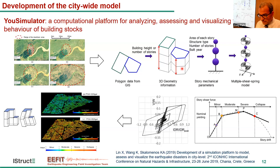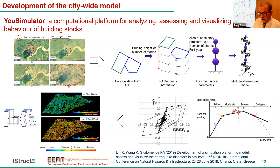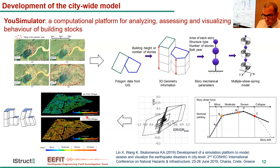This relationship is based on the seismic design codes of the region, the structural type, and the construction period in which the buildings were constructed. The platform is called the U-Simulator. It analyzes the building in a time history domain, specifies the damage index at every building based on the seismic analysis, and has a visualization module where we can see the damage distribution across the area and identify the most critical areas in the city.